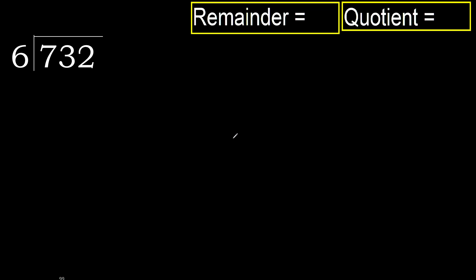732 divided by 6. 7 is not less, so we work with 7. 6 multiplied by which number is nearest to 7 but not greater? 6 multiplied by 2 is 12 — 12 is greater. Multiplied by 1 is 6, which is not greater. Subtract: 7 minus 6 is 1.